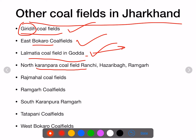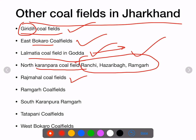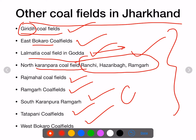North Karanpura coal field is in Ranchi, Hazaribag, and Ramgarh. There is also Rajmahal coal hill, Ramgarh coal field, South Karanpura coal field in Ramgarh or Tatapani coal field, and West Bokaro coal field. These are the coal fields in Jharkhand — remember these as they could be important for the JPSC exam.